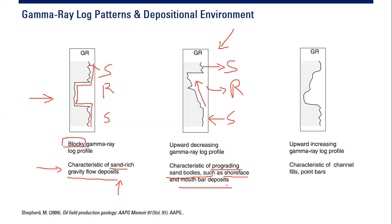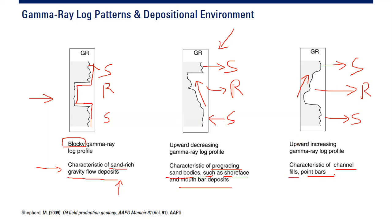As engineers we may not be very familiar with shoreface facies or mouth bar deposits, but we can ask our geoscientist friends about the significance. Lastly, we have the upward-increasing gamma ray log profile. We again have high gamma ray — shale — as our top and bottom boundary, and the reservoir in between, but the gamma ray increases going upward. This upward-increasing gamma ray log profile is characteristic of channel fill or point bar, so we may be in a channel reservoir.